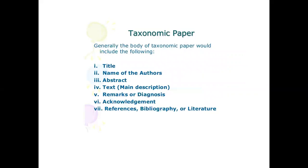Taxonomic Paper: Generally, the body of a taxonomic paper will include the following: Title, Name of the author, Abstract, Text (main description), Remarks or diagnosis, Acknowledgment, and References or Bibliography.